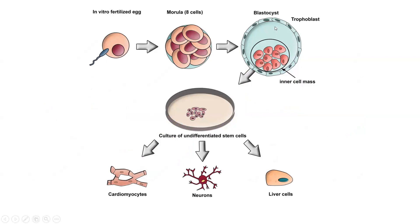There are a lot of cells inside the blastocyst. We remove the cells and grow them in cell culture. Since stem cells have the power to differentiate into different kinds of cells, they can be divided into cardiomyocytes, neurons, or liver cells — they have the power to differentiate into different cell types.